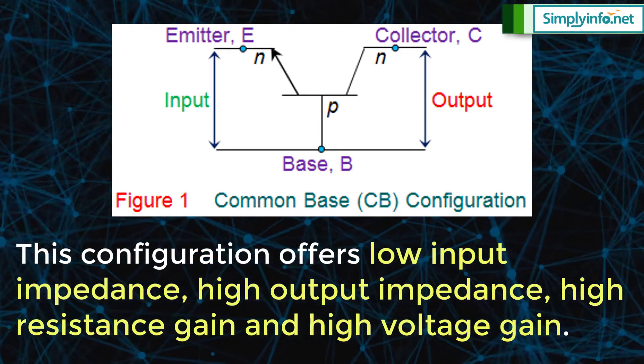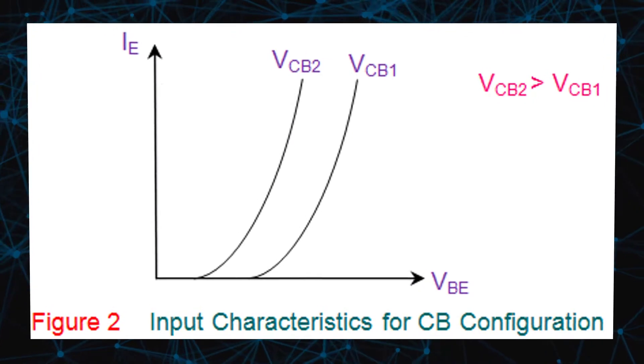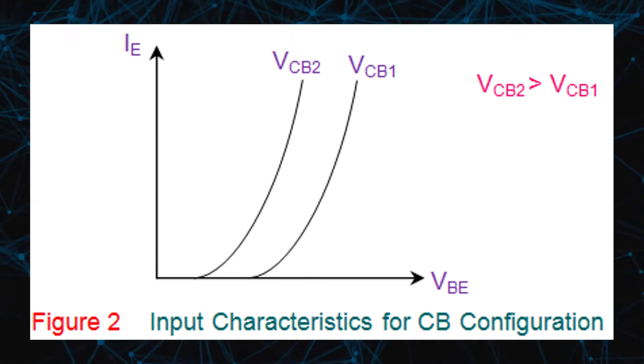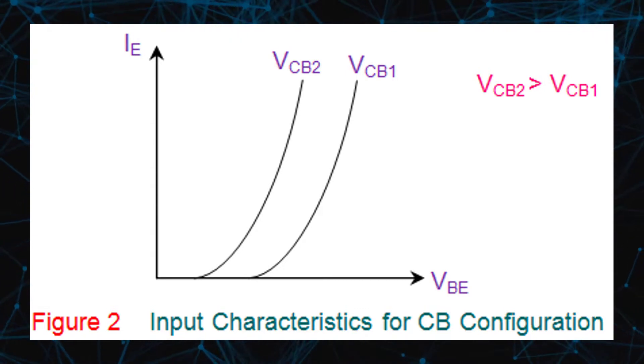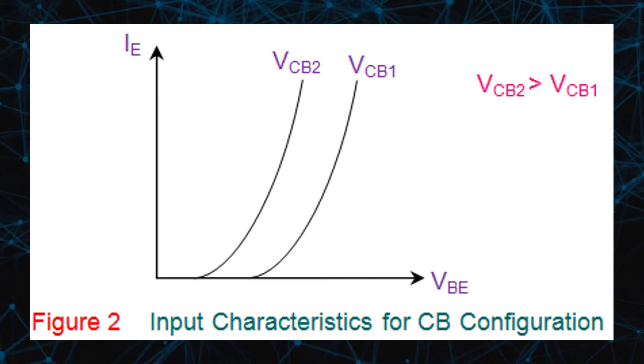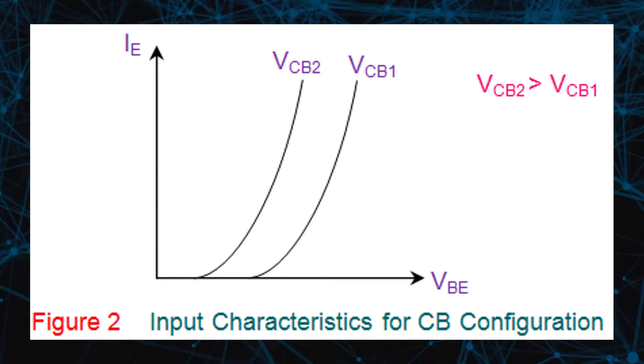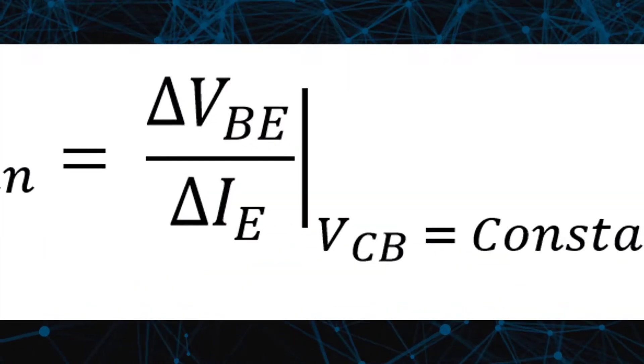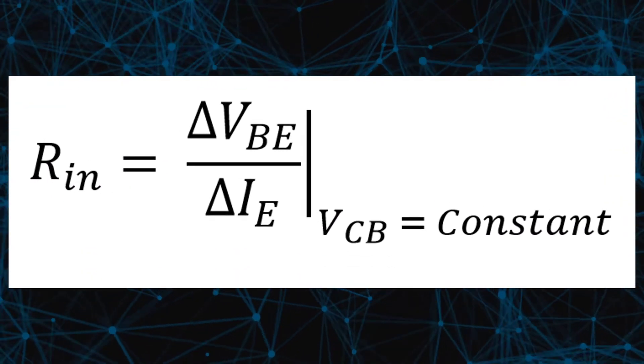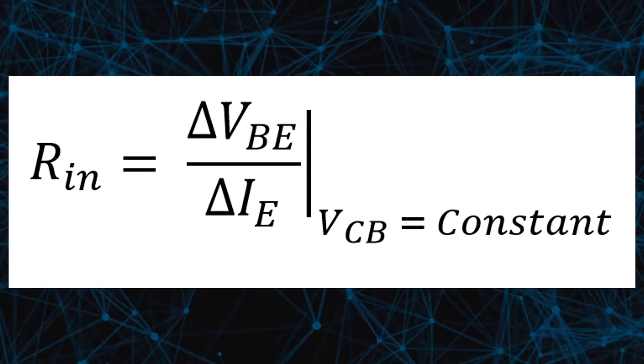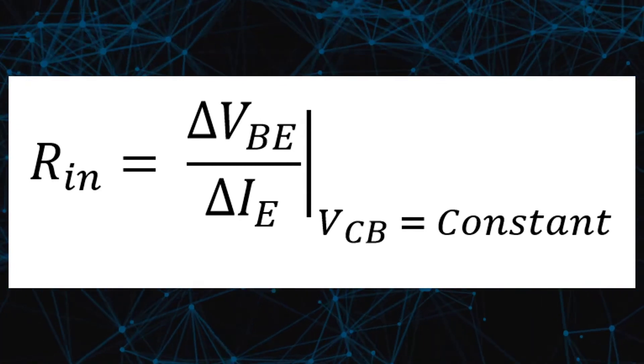Input characteristics for CB configuration of transistor. The figure shows the input characteristics of a CB configuration circuit which describes the variation of emitter current IE with base-emitter voltage VBE, keeping collector-base voltage VCB constant. This leads to the expression for the input resistance as RIN equals delta VBE by delta IE, where VCB is constant.